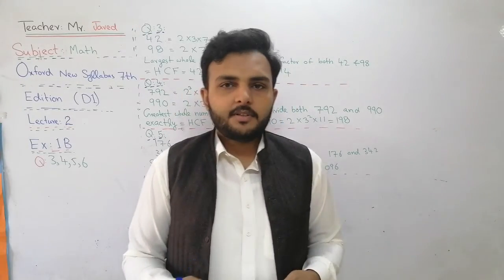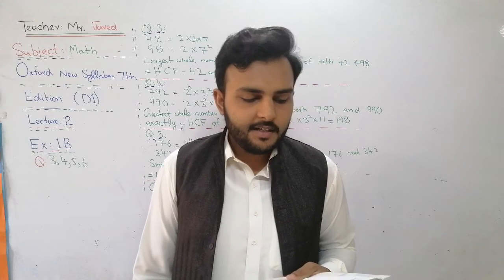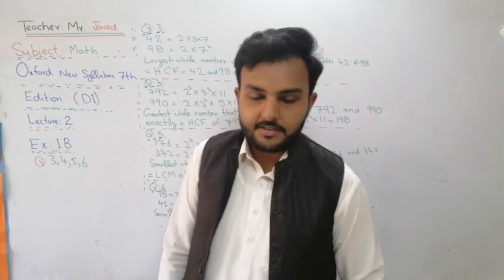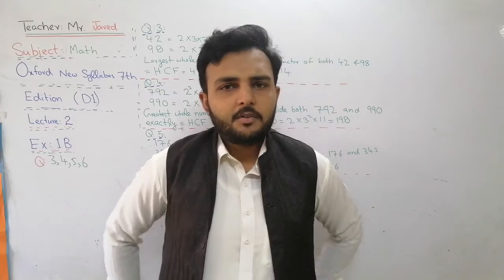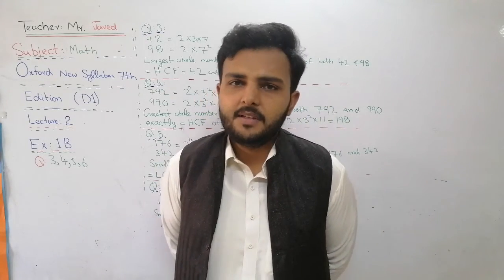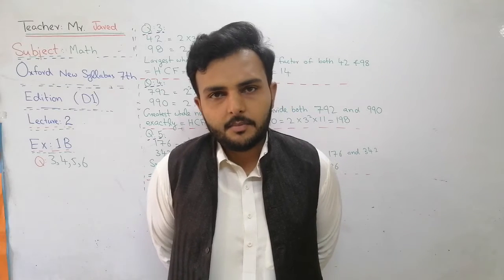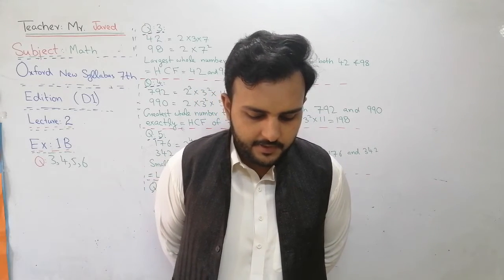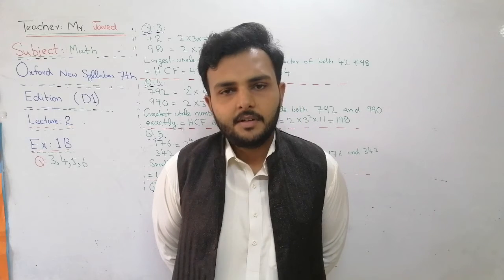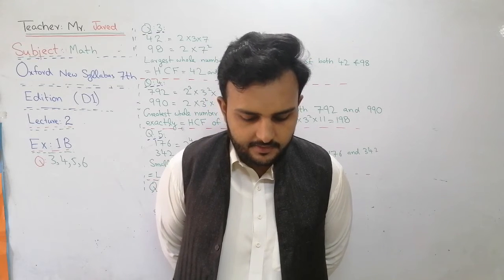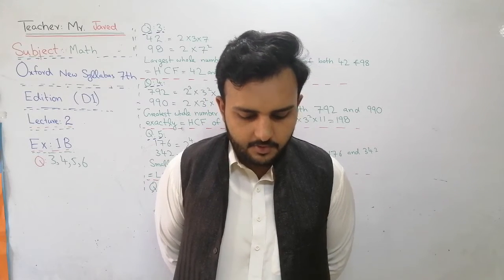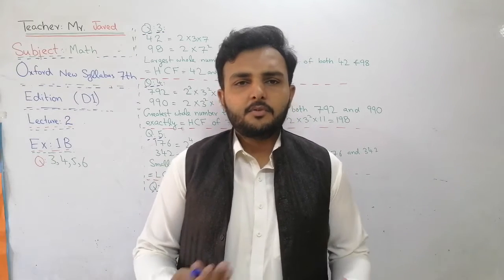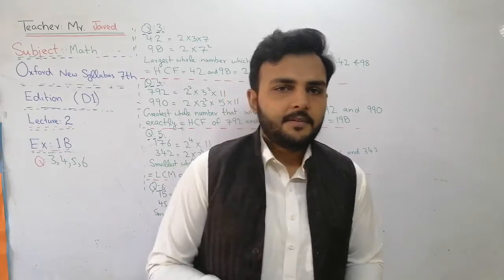In question number 3, you can see in your book: find the largest whole number which is a factor of both 42 and 98. I told you about HCF — H stands for Highest, and here if we want to find the largest whole number which is a factor of both 42 and 98, we have to find the HCF.